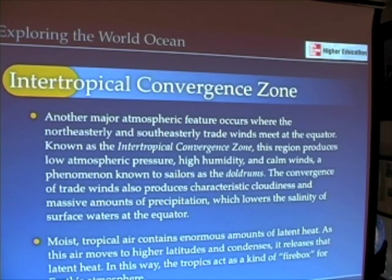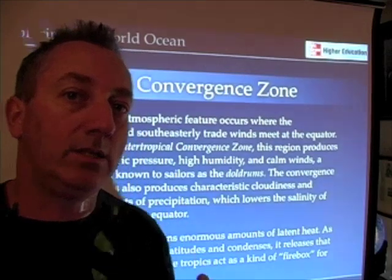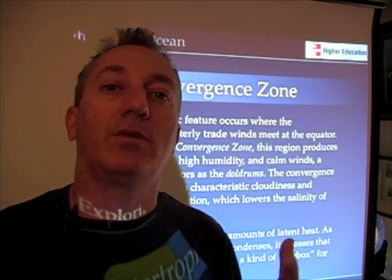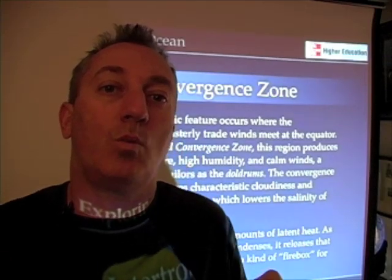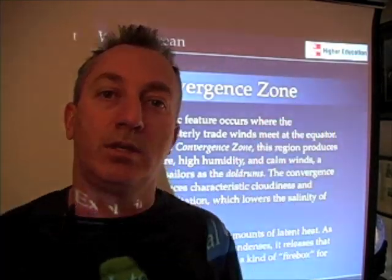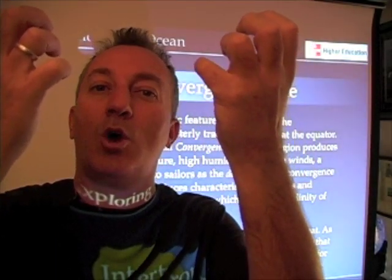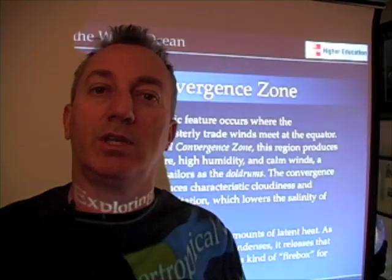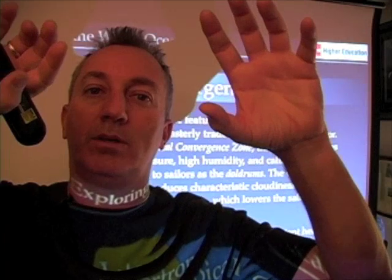This moist tropical air that rises over the equator is carrying heat with it. To turn liquid water into water vapor, we have to add the latent heat of vaporization — that 540 calories per gram for water at 100 degrees. So as water evaporates, it takes heat with it. The air and water vapor rising over the equator carry that heat, and the Hadley cell and atmospheric circulation distribute that heat across the globe.